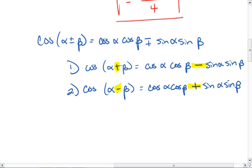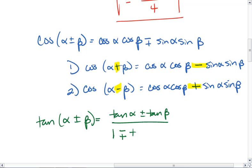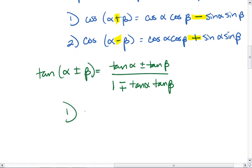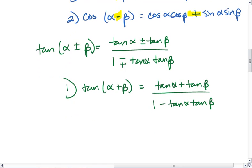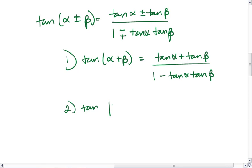And our last formula is tangent. Tangent of alpha plus or minus beta is going to be equal to tangent alpha plus or minus tangent beta all over 1 minus plus tan alpha tan beta, which gives us these two equations. Tan of alpha plus beta ends up being tan alpha plus tan beta all over 1 minus tan alpha tan beta. And then tan of alpha minus beta equals tan alpha minus tan beta all over 1 plus tan alpha tan beta.